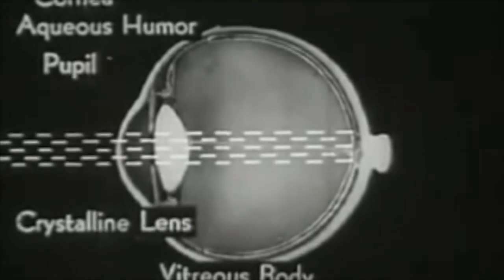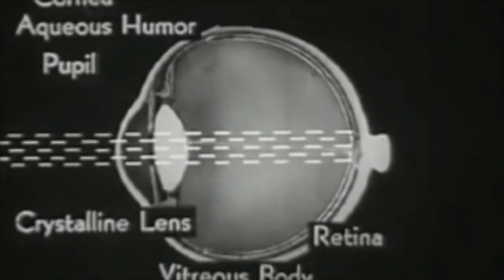Now, just how do light rays act to form a clear picture within the eye? First, let us realize that light rays reflected from any object radiate in all directions, and that as an object moves farther away from us, the angle between the rays that enter our eyes grows smaller and smaller.